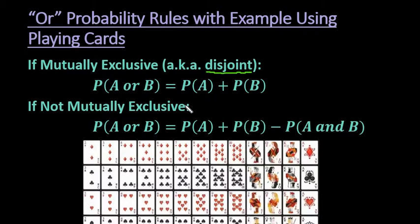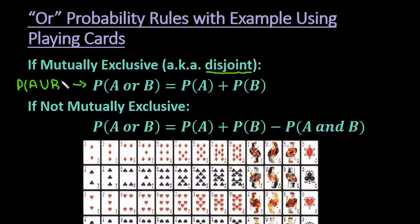If they are not mutually exclusive — meaning they can both occur at the same time — then we use the rule: the probability of A or B equals the probability of A plus the probability of B minus the probability of A and B. In some textbooks this is written symbolically. You can write it either in word form or symbolically; both mean the same thing and are acceptable.